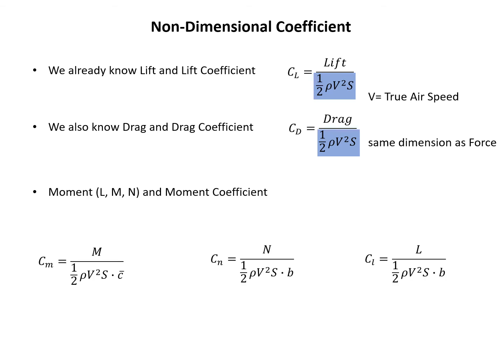Since we are looking at flight dynamics, we are also interested in the moment and the moment coefficients. We have three moments and three moment coefficients. We already know half rho v squared has a dimension of force, and now in the denominator we multiply by either c̄ or b as a characteristic length, so together the denominator has the dimension of moment. That's why we use half rho v squared S times c̄ or b as a denominator for the non-dimensionalization of the moment.